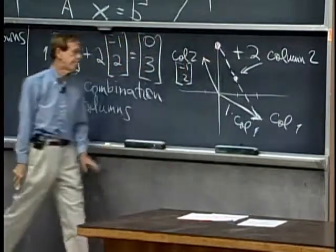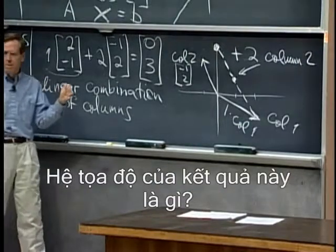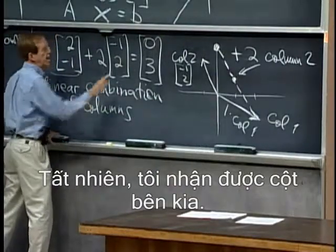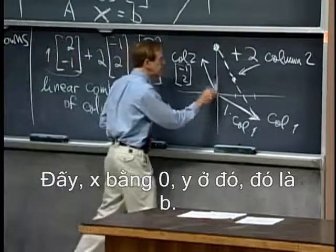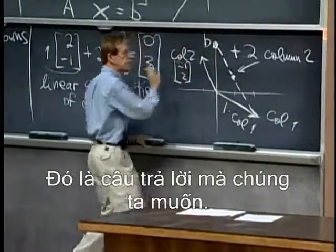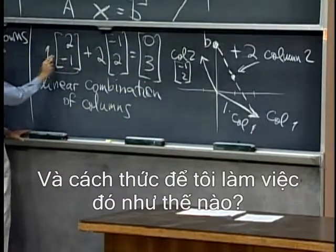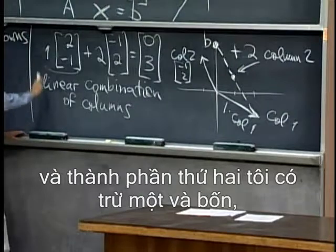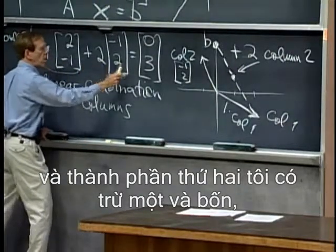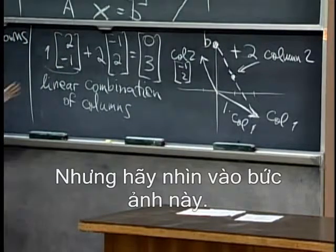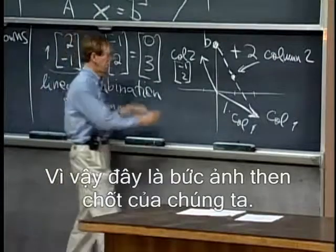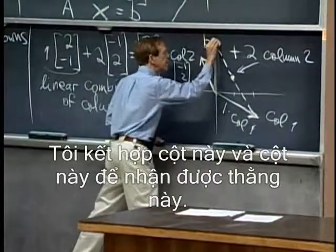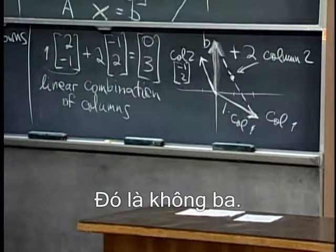And where did I end up? What are the coordinates of this result? What do I get when I take one of this plus two of that? I do get that, of course. There it is — x is zero, y is three. That's b. That's the answer we wanted. You see: in the first component I have a two and a minus two that produces a zero, and in the second component I have a minus one and a four, they combine to give the three. But look at this picture — here's our key picture. I combine this column and this column to get this vector. That was b, the zero three.